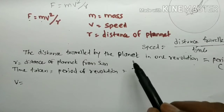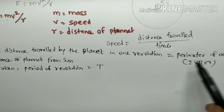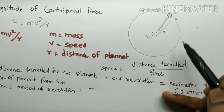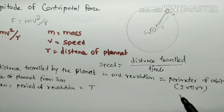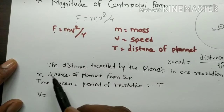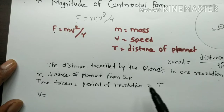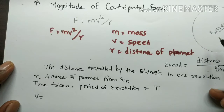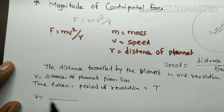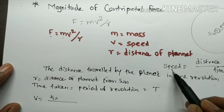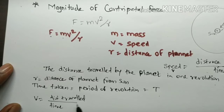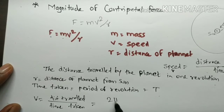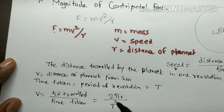The distance travelled by the planet in one revolution equals the perimeter of the orbit. The formula for the perimeter of the circle is 2πr. Here, r is the distance of the planet from the sun, and T is the period of revolution — the time taken to complete one revolution. So v equals distance divided by time, meaning v = 2πr/T.